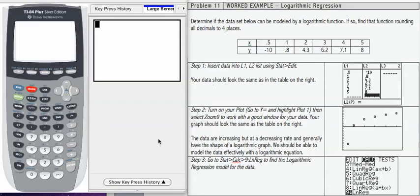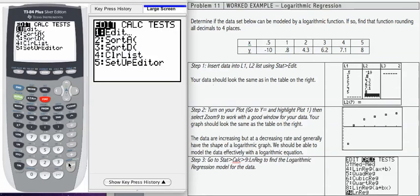So in problem 11, we have a data set, and we're wondering if it can be well modeled by a logarithmic function. And if so, we need to find that function. So in order to determine if a logarithmic function will effectively model the data, we first need to enter our data into our stat list for L1 and L2.